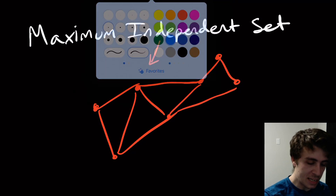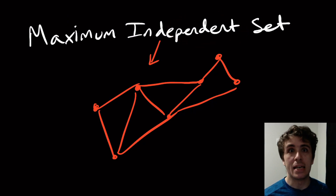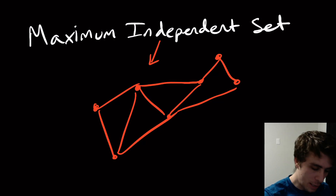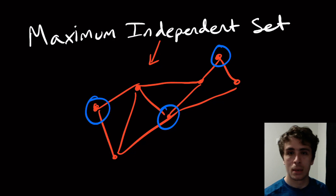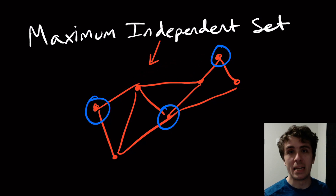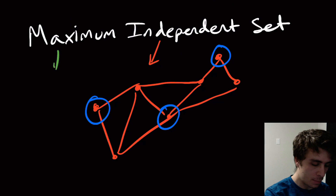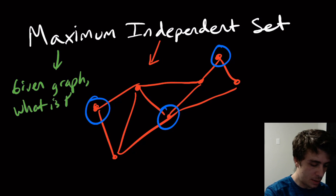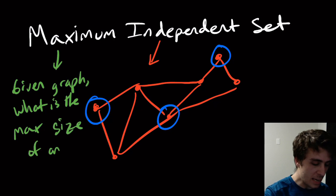An independent set is a collection of vertices that don't have edges between them. So I could pick that vertex, that vertex, and that vertex — there's no edge connecting any of these three together. The blue vertices form an independent set. Given a graph, the question is: what is the maximum size of any independent set? I'll abbreviate that as IS.